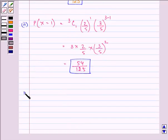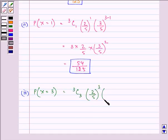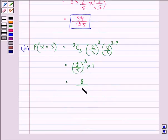Proceeding with the third part, we need to find that all will graduate, meaning x equals 3. So it is 3C3 times (2/5)^3 times (3/5)^(3-3). We have (2/5)^3 times 1, which equals 8/125.